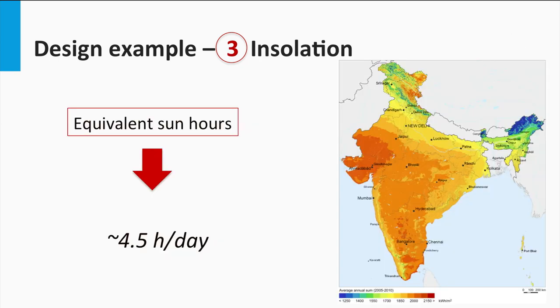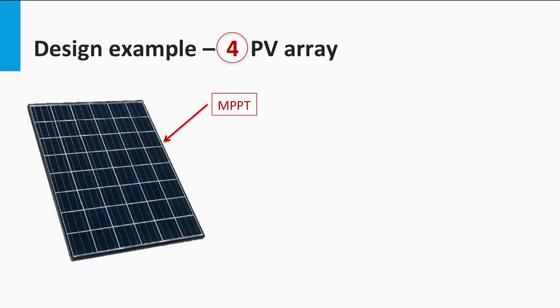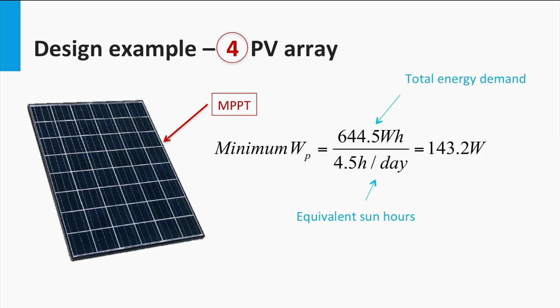Next, we consider the irradiance. Going by the same example as in the standalone system case, a location in India is considered with an average of 4.5 equivalent sun hours. Let's look at the electrical specification of an available PV module. It is a 100 Wp rated module with the given voltage and current parameters. Now, we need to find out how many of such modules are required to power the loads. Assuming that the panel would be operated at its maximum power point, we can find out the required number of panels as follows. We can first calculate the amount of minimum PV power required by dividing the total energy demand at the PV array output with the equivalent sun hours. Thus, the minimum PV power required is 143.2 Watts.